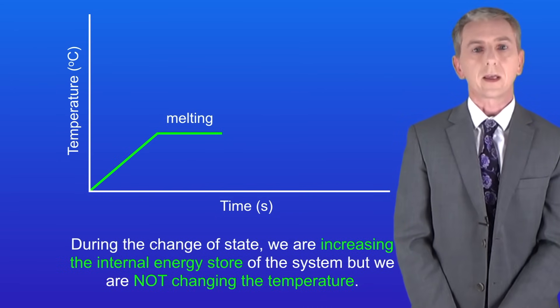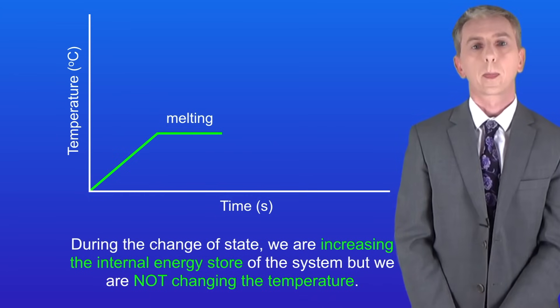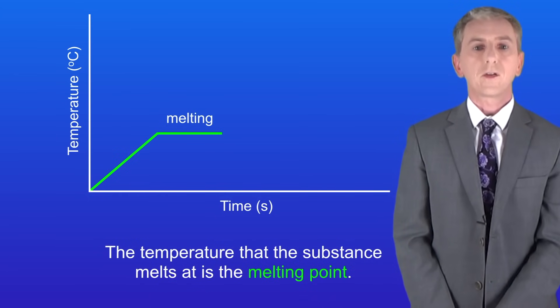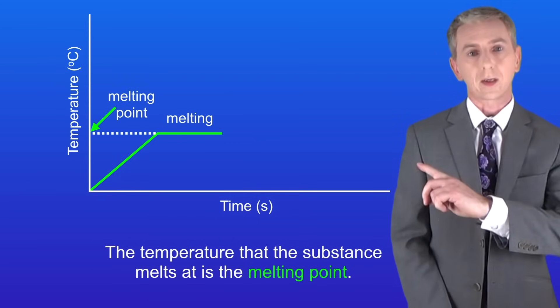During the change of state we're increasing the internal energy store of the system but we're not changing the temperature. The temperature that the substance melts at is the melting point and we can find that by reading it off the graph like this.